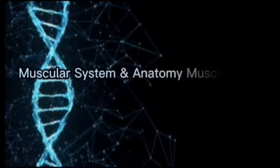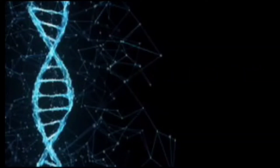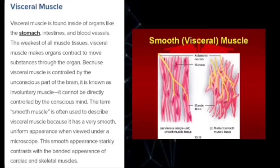Visceral muscle is found inside of organs like the stomach, intestine, and blood vessels. Visceral muscle makes organs contract to move substances through the organ. Because visceral muscle is controlled by the unconscious part of the brain, it is known as involuntary muscle. It cannot be directly controlled by the conscious mind.